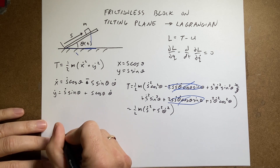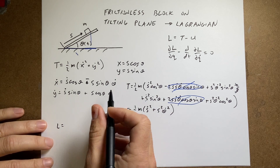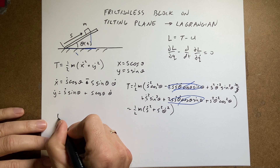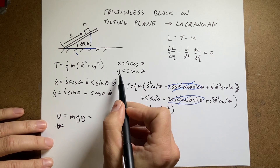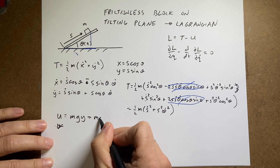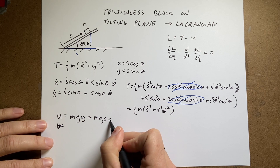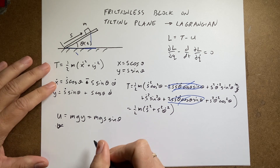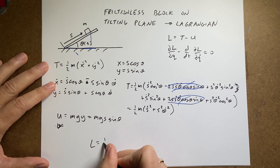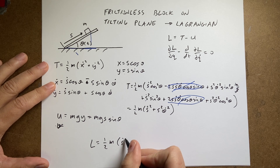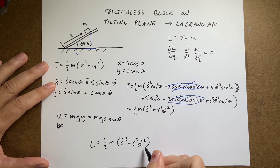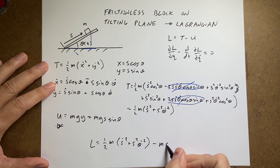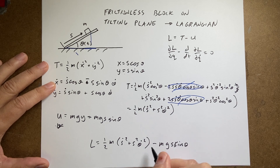Now I can write down the Lagrangian. The potential energy is U = mgy = mgs·sin(θ). So the full Lagrangian is: L = (1/2)m(ṡ² + s²·θ̇²) − mgs·sin(θ).